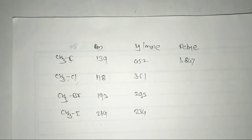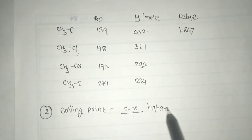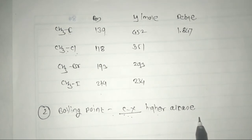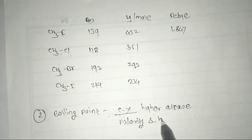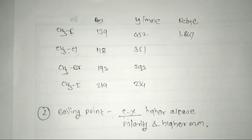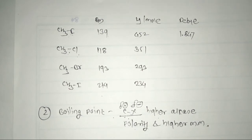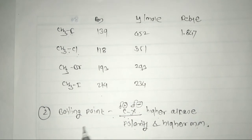The second physical property is the boiling point. The boiling point of alkyl halides is higher than the corresponding alkane due to the higher polarity and higher molecular mass of alkyl halides. Halogens are highly electronegative, so the carbon carries a partial positive charge and halogen a partial negative charge, resulting in higher polarity and higher molecular mass.